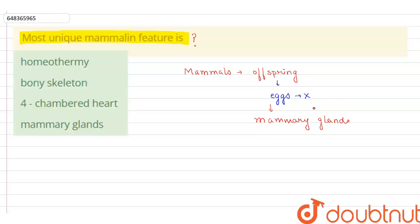So the mammals have mammary glands in them which give food and nutrition to these offspring. This mammary gland is such a quality, is such a feature that it is not present in any other animals. So this is their most unique feature.